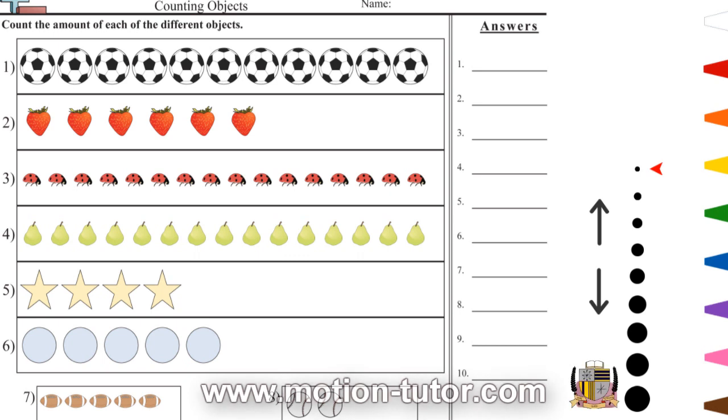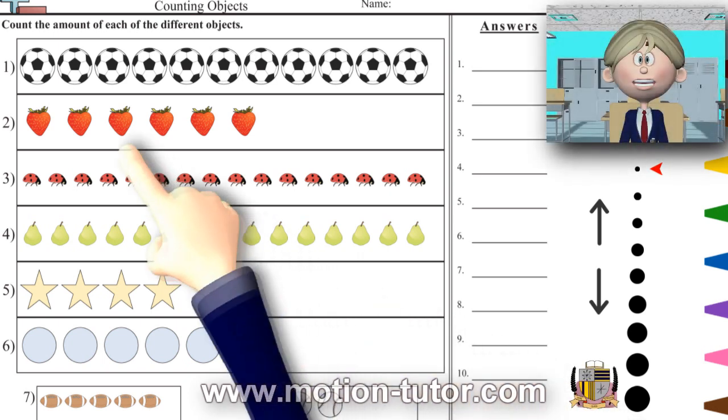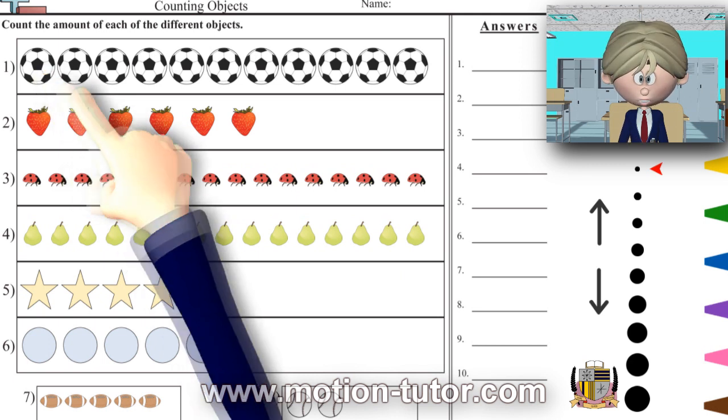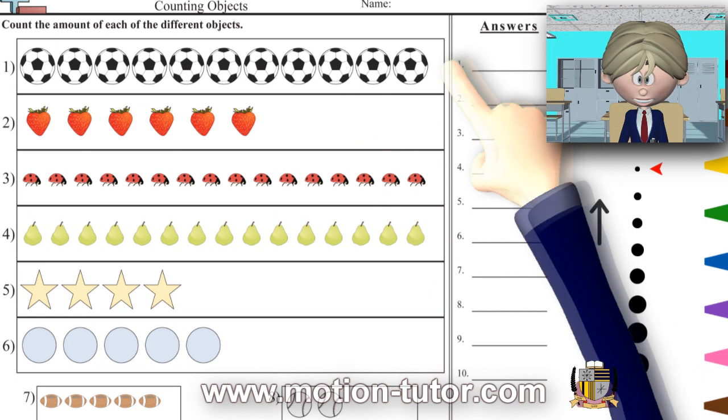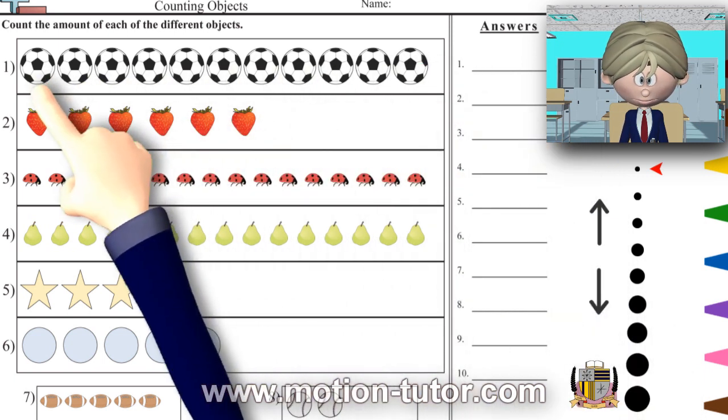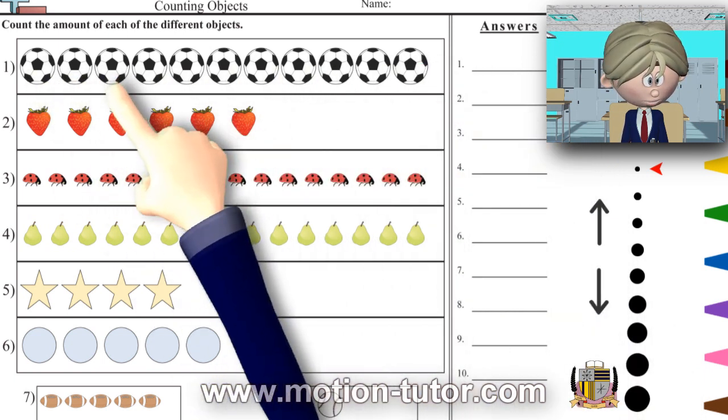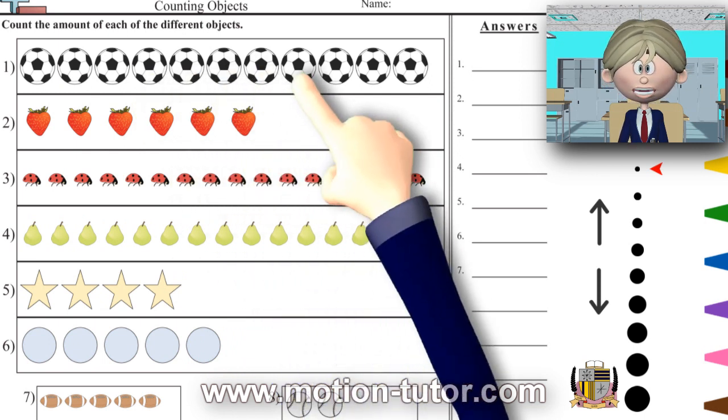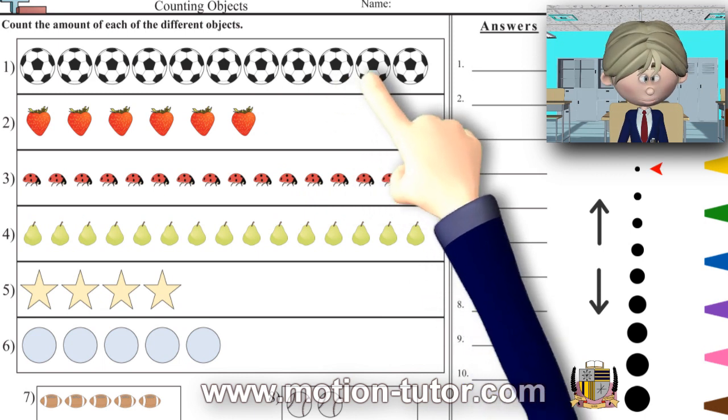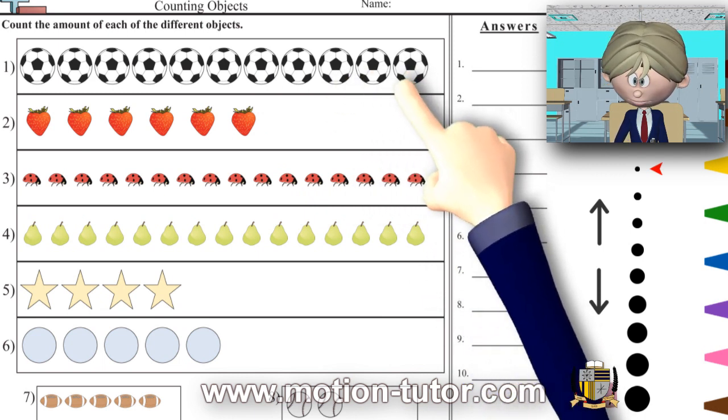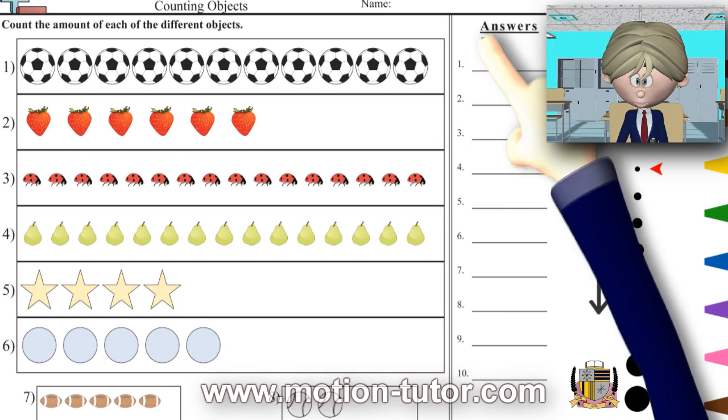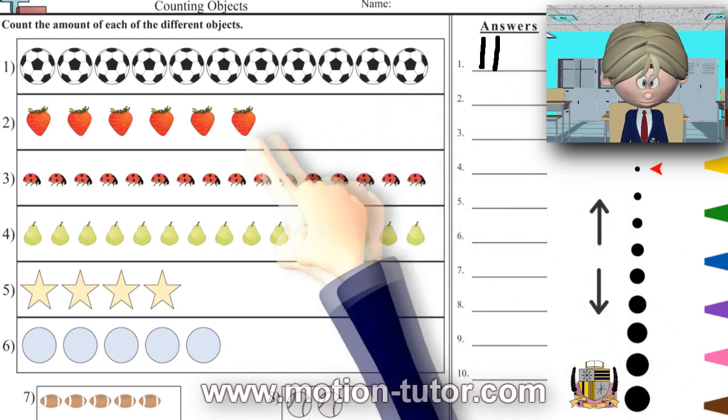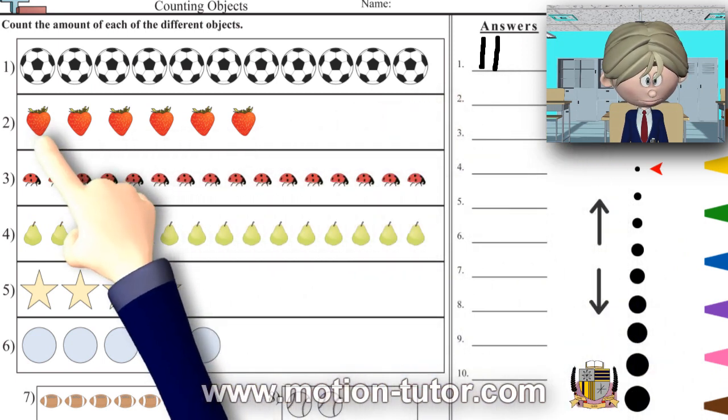Okay, we're gonna do some counting. Let's start with these soccer balls up here. Let's count how many soccer balls there are and we'll write it over here. Ready? Let's go. One, two, three, four, five, six, seven, eight, nine, ten, and eleven. Eleven soccer balls and I will write the number eleven over here. Now for the strawberries, one...